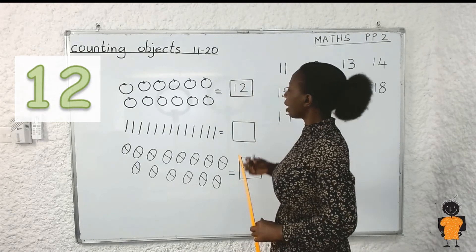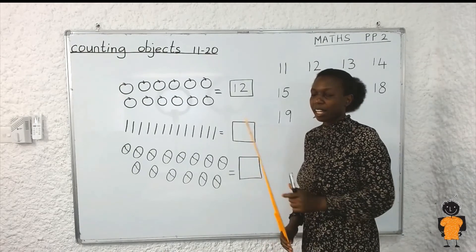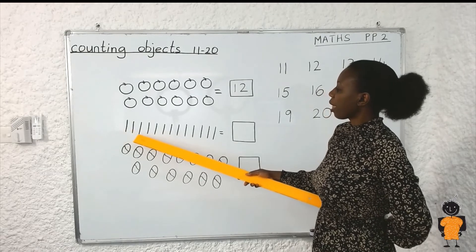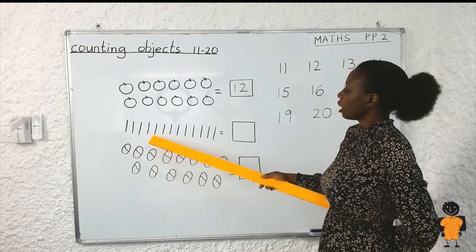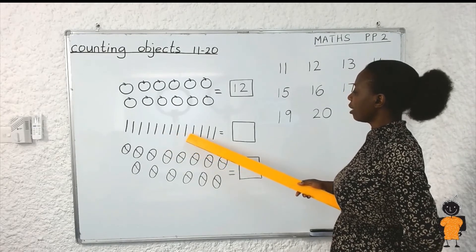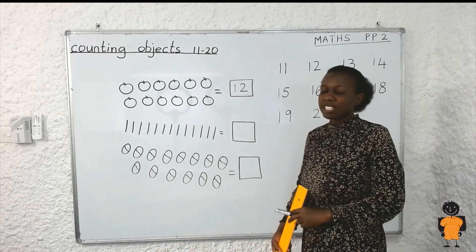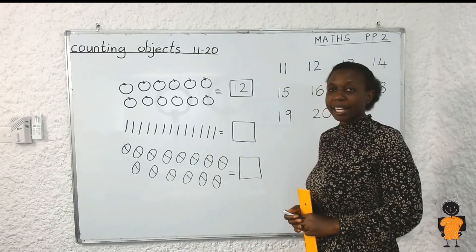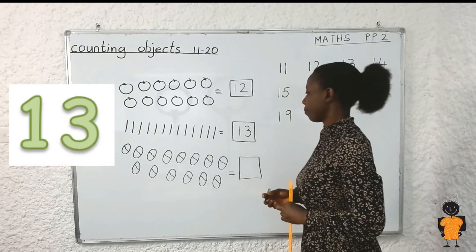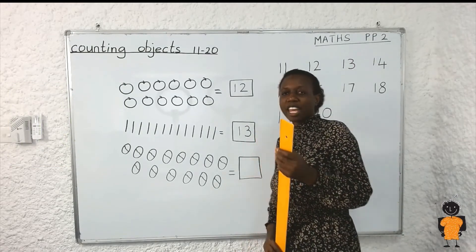Now let us count the sticks again. Are you ready? One, two, three, four, five, six, seven, eight, nine, ten, eleven, twelve, thirteen. How do we write number 13? One and three — 1 and 3.